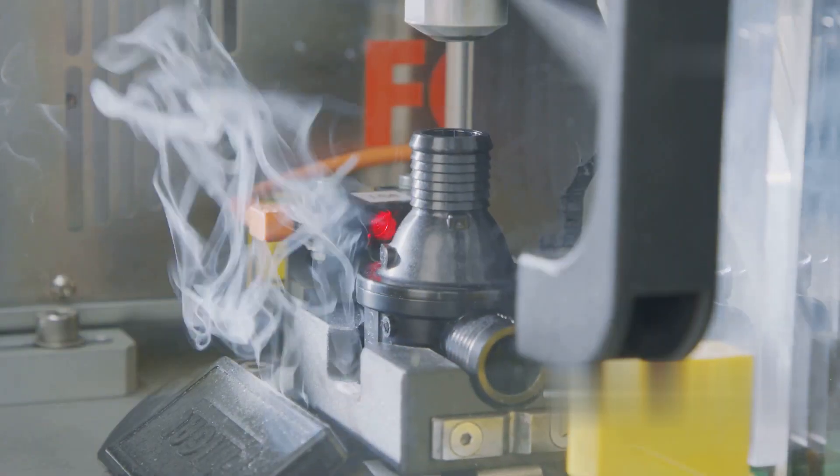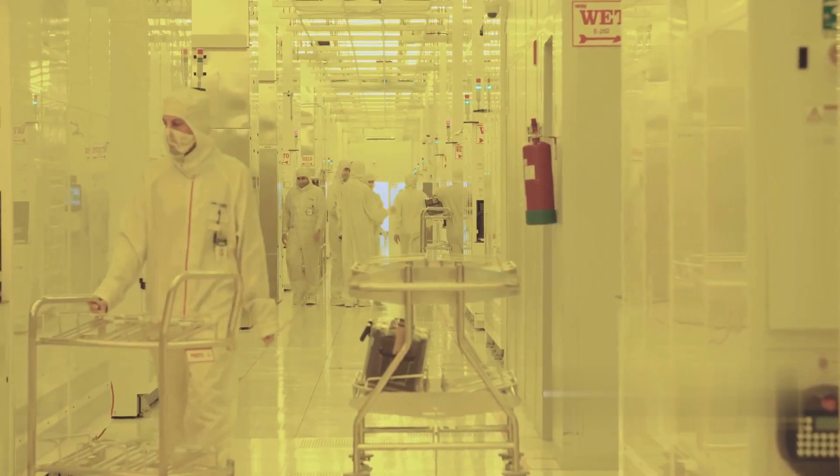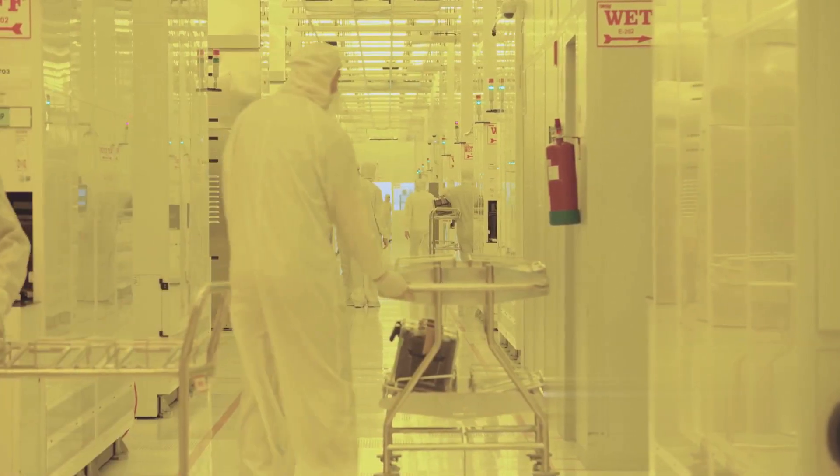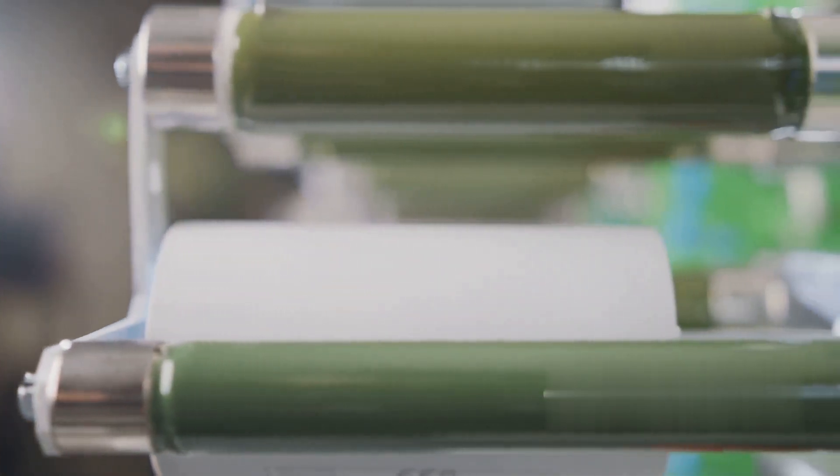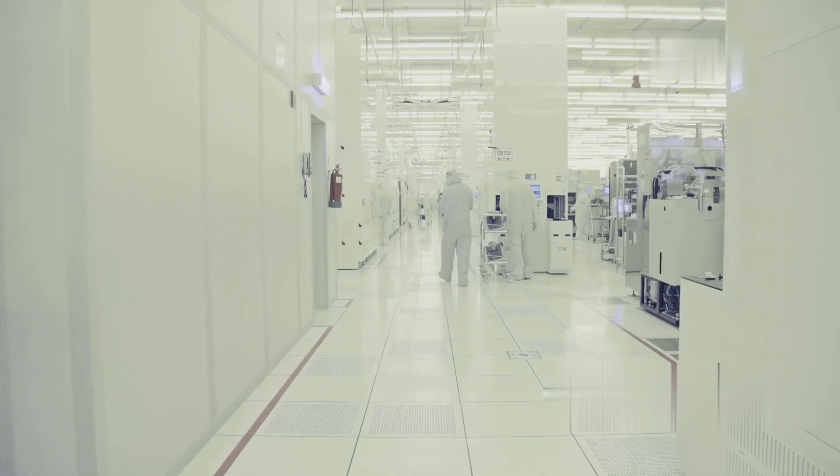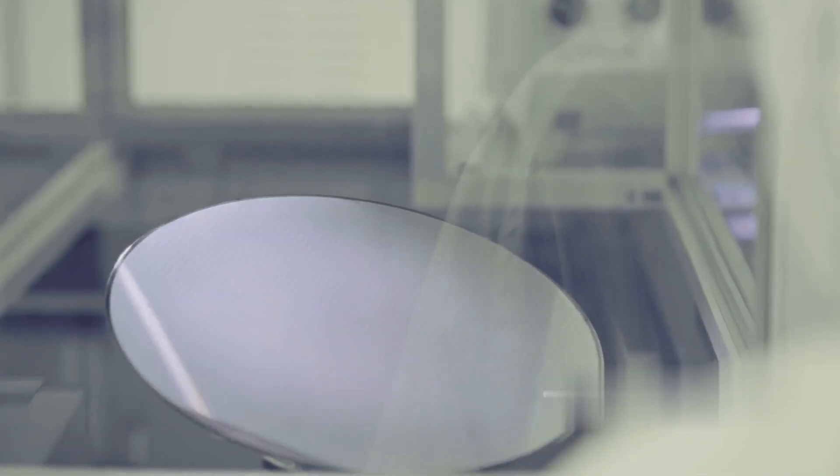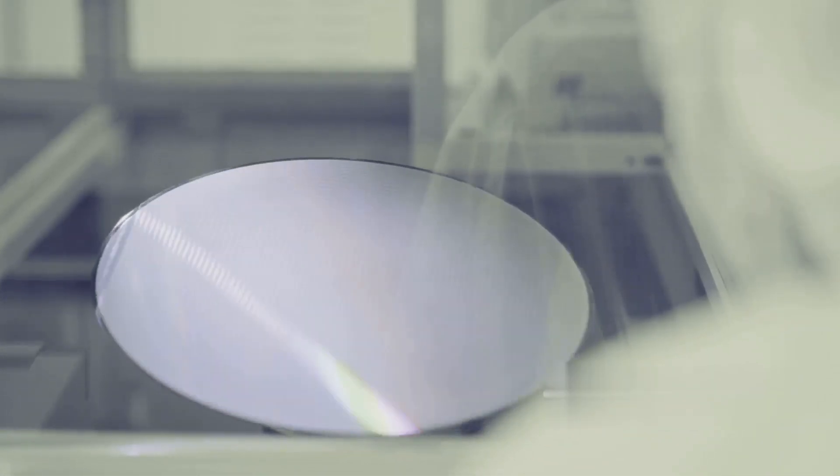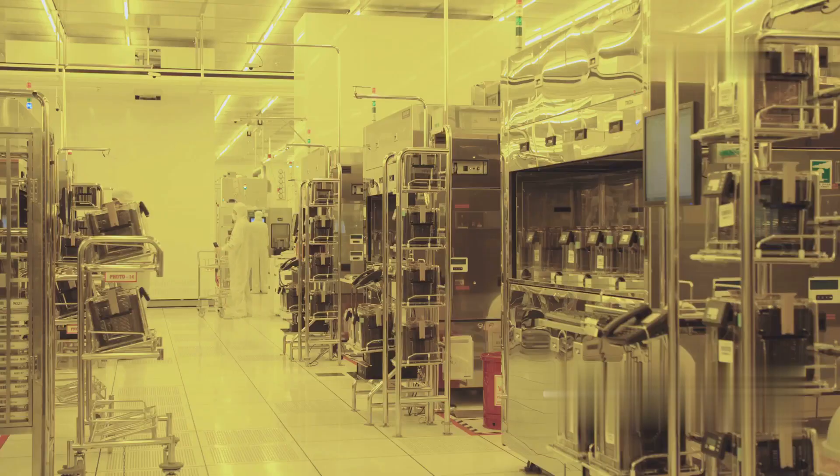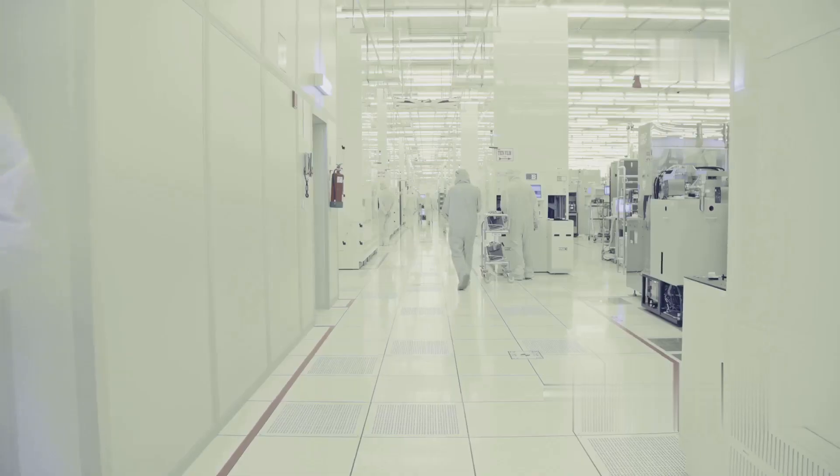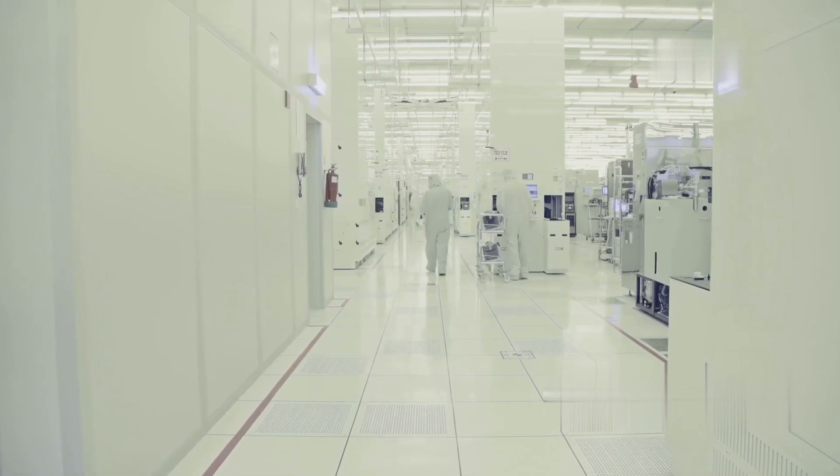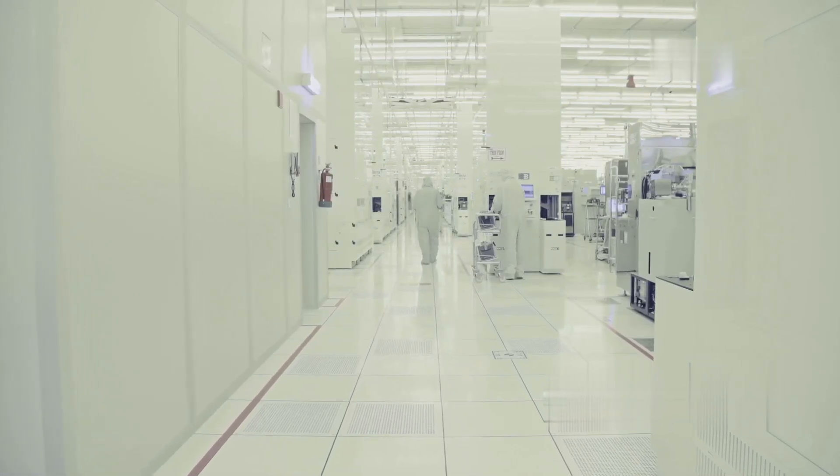The transistor structure is built up layer by layer using a combination of deposition and etching processes. Each layer adds a new element to the transistor, creating the intricate network of connections that define its functionality. The deposition processes involve adding thin films of various materials onto the wafer surface. One common deposition method is chemical vapor deposition, or CVD, where gases containing the desired material are introduced into a chamber containing the wafer. The gases react at the wafer surface, depositing a thin film of the material. Another method is physical vapor deposition, or PVD, where the material is vaporized and then deposited onto the wafer surface.